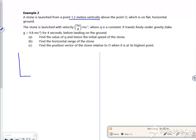So it's launched with a velocity of 2q and q. So it's 1.2 meters high, that's my positive direction. I've got a velocity vector there, and I know that my velocity vector is 2q across and q up. What else does it tell us in this question?